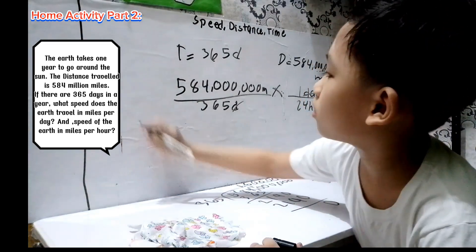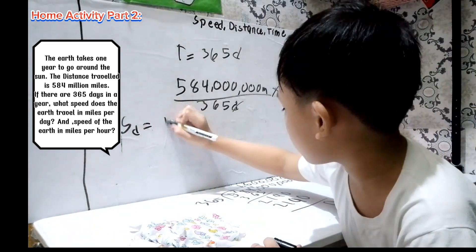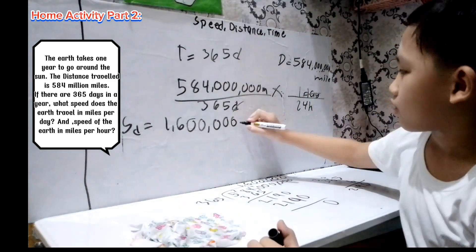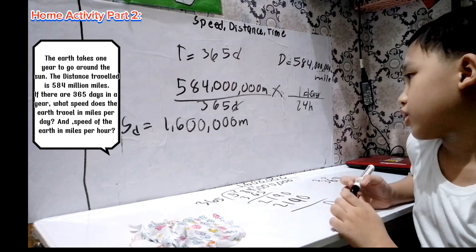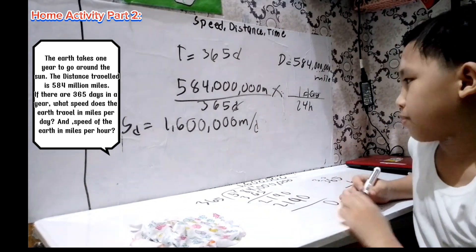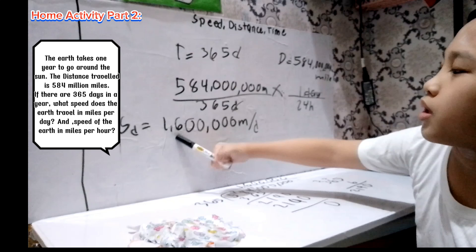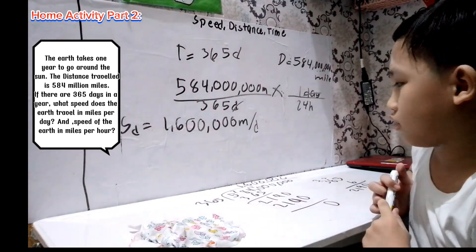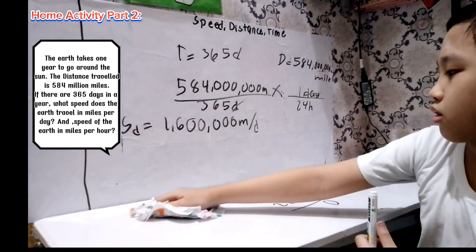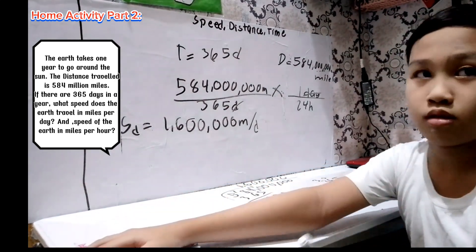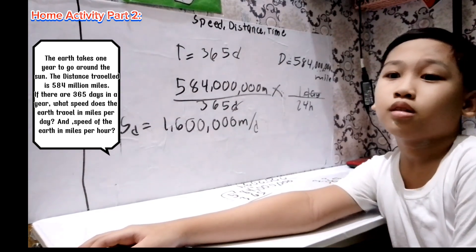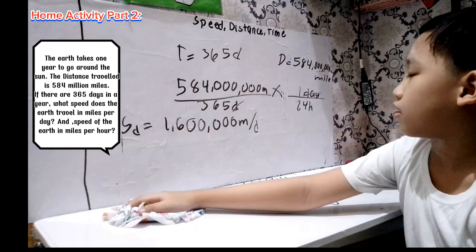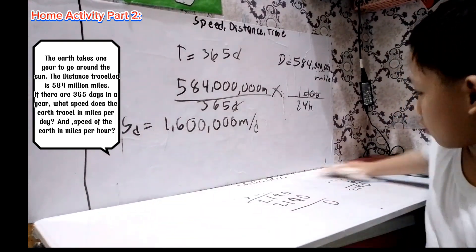The speed per day is 1,600,000 miles per day. Very good. So you divide the distance of 584,000,000 miles by 365 days to get the speed per day. You got 1,600,000 miles per day.